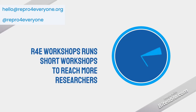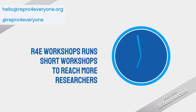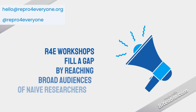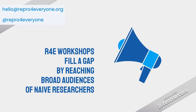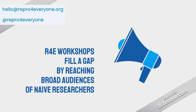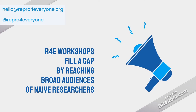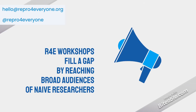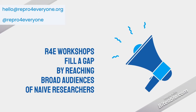We try to run short trainings. Most of our trainings are around 90 minutes. We're trying to keep things short so that we can run more and get more people in the room. We are focusing on mostly large workshops, targeting scientific conferences as well as other large meetings to reach a broad audience of people who might not attend a reproducibility workshop at their institution because they're not interested or don't feel like they have time.